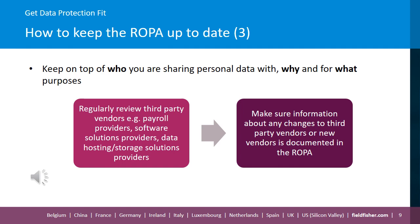Finally, you need to keep on top of who your organisation is sharing personal data with, what personal data is being shared and for what purposes. This can be done by regularly reviewing the third-party vendors your organisation is working with and any data sharing agreements that are in place. Examples of third-party vendors include payroll providers, software solutions providers and data hosting or storage solutions providers. Any changes to vendors, any changes to the personal data being shared with them or to the processing relationship should be documented in the ROPA. If your organisation starts working with new vendors, this information should also be included in the ROPA.